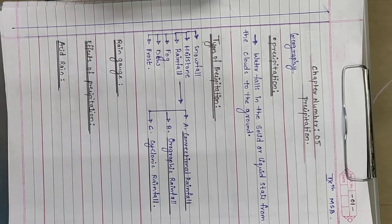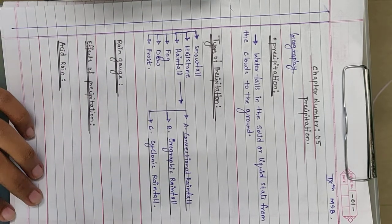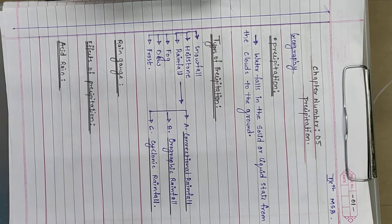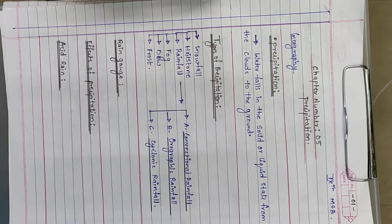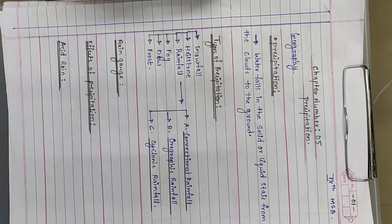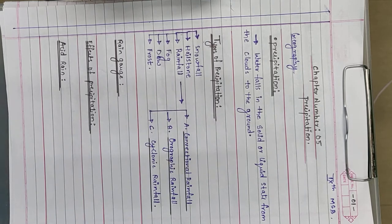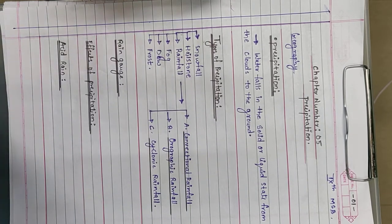Hello everyone, welcome to our channel Maxwell Study Hub. Today we are going to start with chapter number 5, that is precipitation. We have completed chapter number 4, exogenetic process part 2, and now we will move ahead towards precipitation.